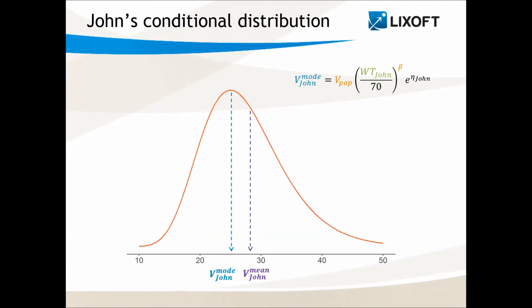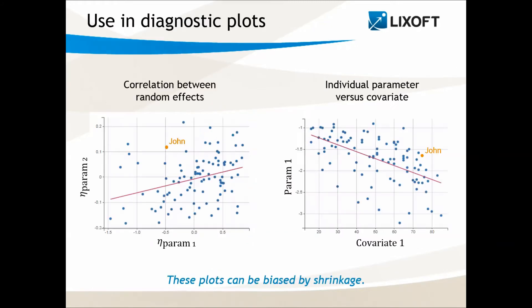Once the EBE value is known, one can easily calculate the associated individual random effect. These values, the individual parameter and the individual random effect, can then be used to diagnose the model. For instance, to detect correlation between random effects, or between random effects and covariates.